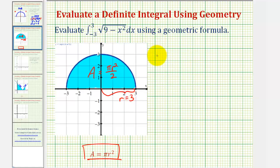Which means the definite integral of the square root of nine minus x squared from negative three to three, integrated with respect to x...